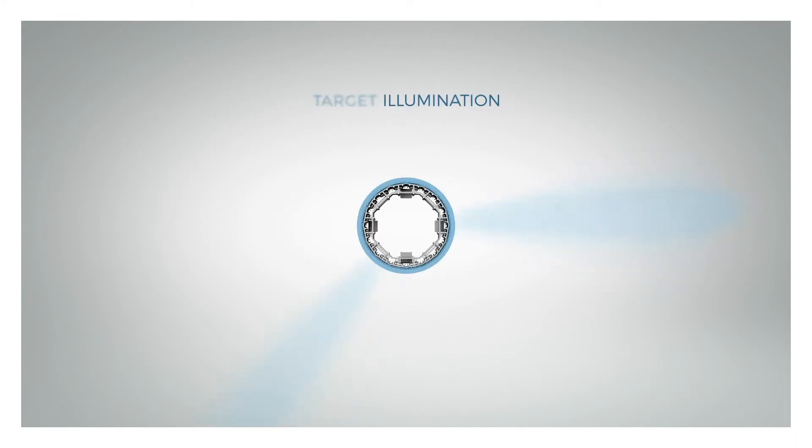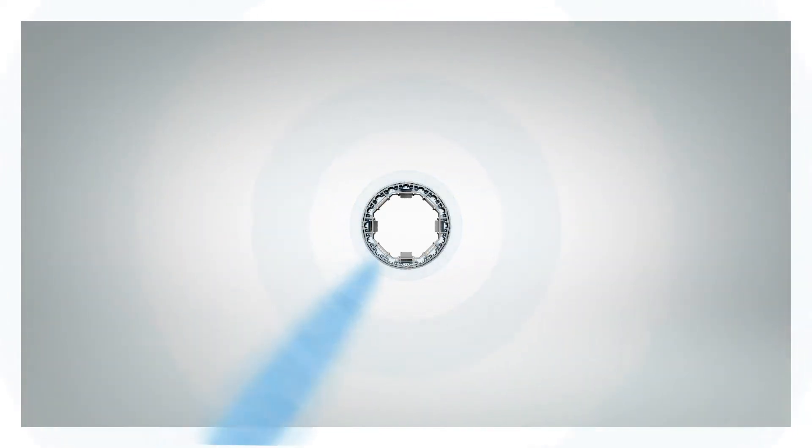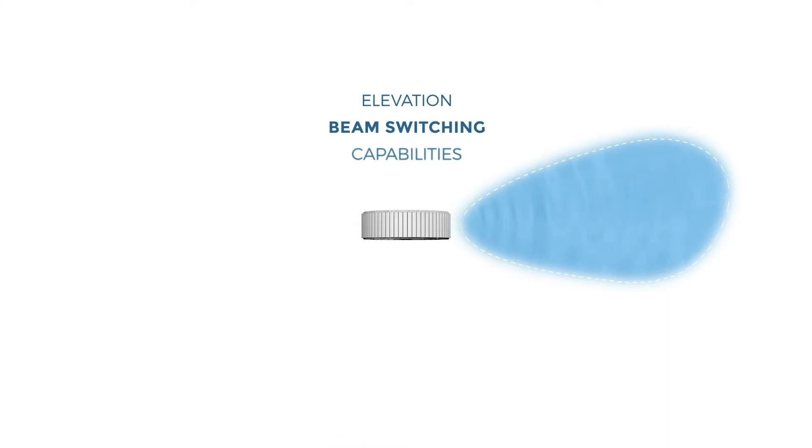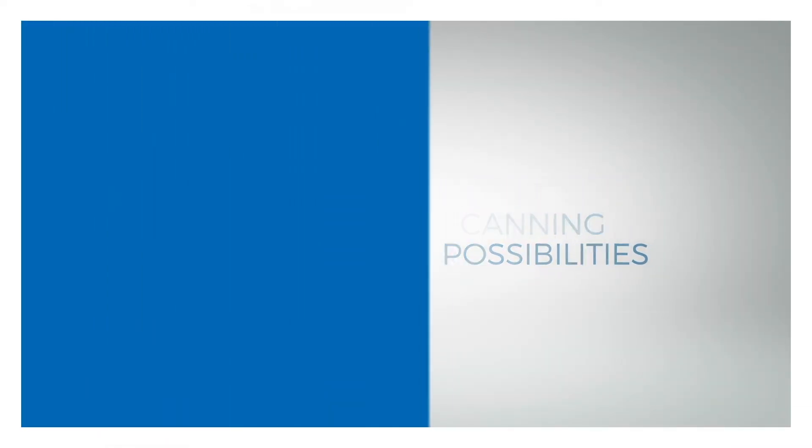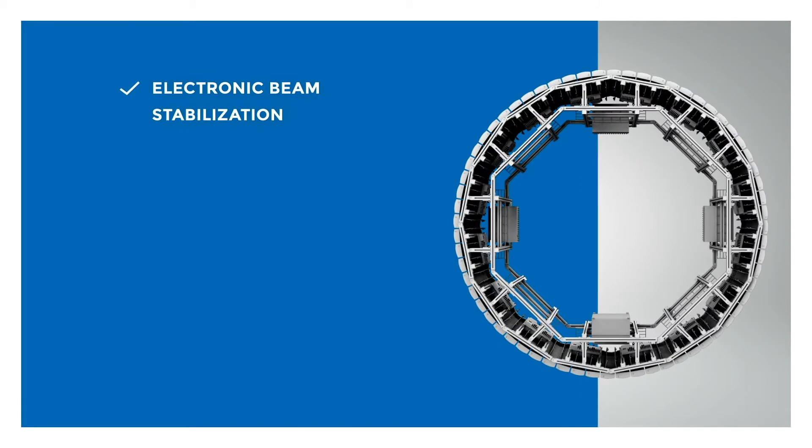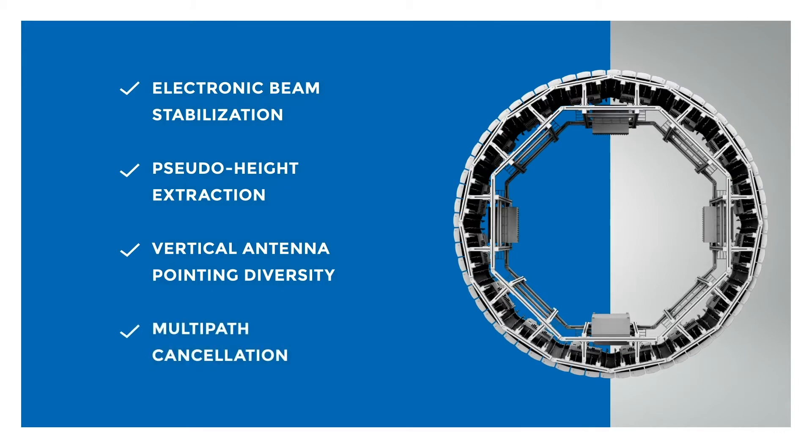This allows for surveillance operation while tracking individual targets of interest continuously. With its elevation beam switching capabilities, full 3D pointing of the beams is possible. These elevation scanning possibilities allow for functions such as electronic beam stabilization, pseudo-height extraction, vertical antenna pointing diversity, and multipath cancellation.